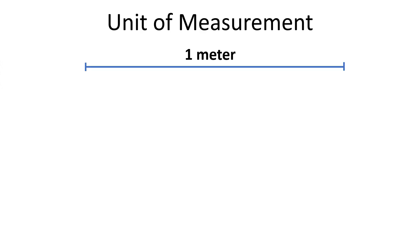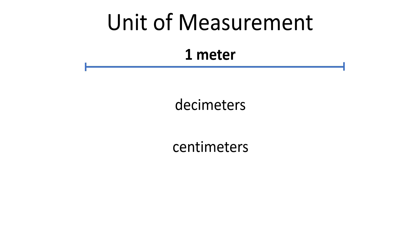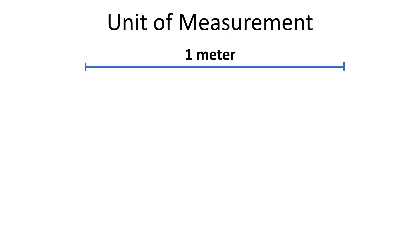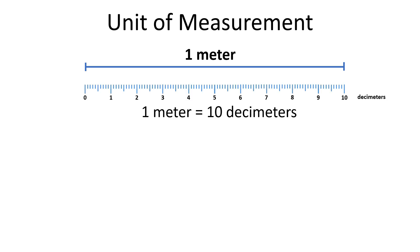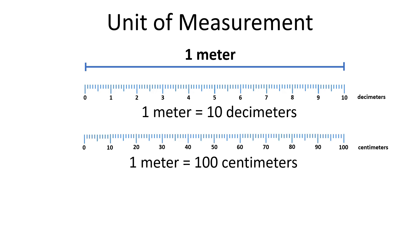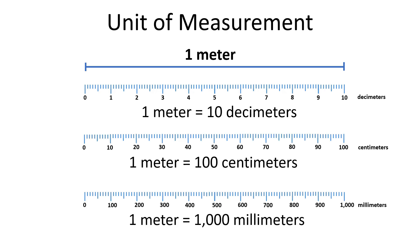In the metric system, the basic unit to measure length is a meter. A meter can be divided into other equal parts such as decimeters, centimeters, and millimeters. The metric system was designed to be easy to use, and all units in the metric system are developed from a meter.